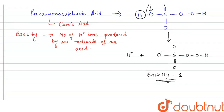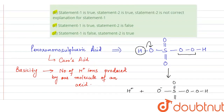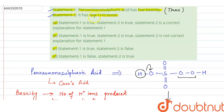Now, looking at the structure, it contains an oxygen-oxygen bond. In the second statement, it is given that it has one O-O bond, and we can see there is indeed only one O-O bond. So statement 2 is also true. However, statement 2 does not explain statement 1.